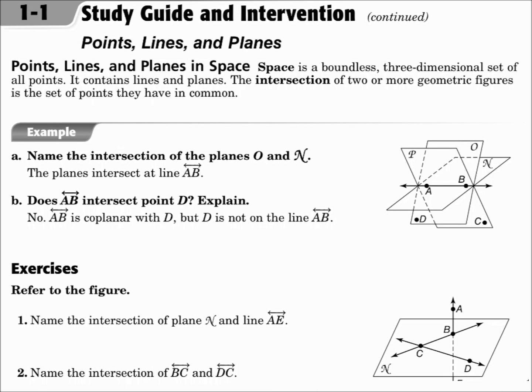Points, lines, and planes in space. Space is a boundless, three-dimensional set of all points. It contains lines and planes. The intersection of two or more geometric figures is the set of points they have in common. Sometimes figures intersect in a point. Sometimes they intersect in a line.